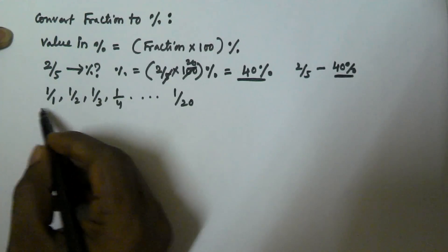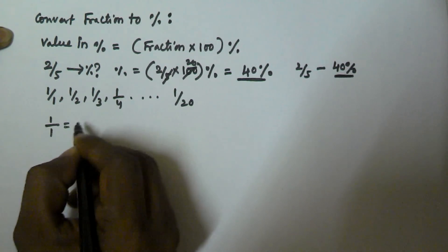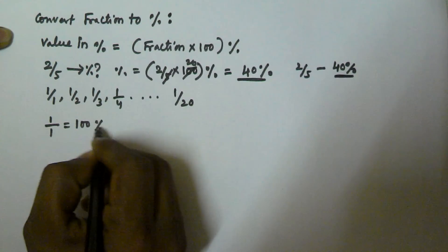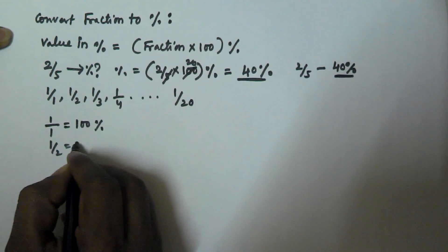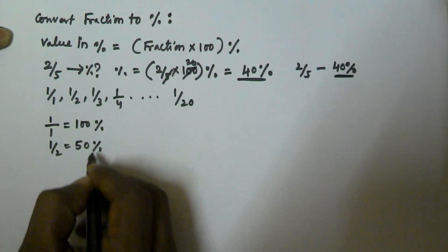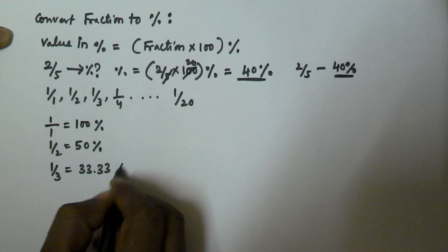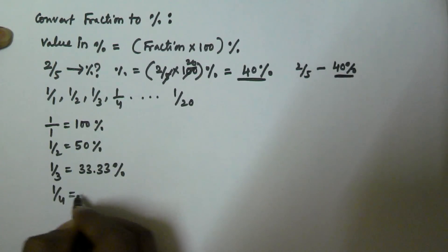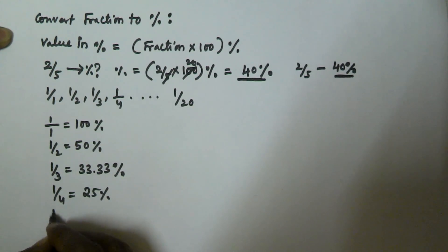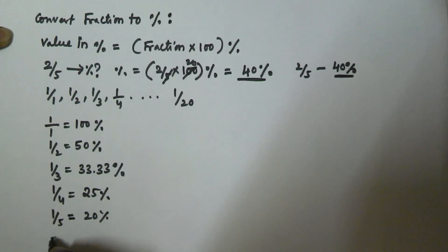Here are the values: 1/1 is equal to 100%, 1/2 is equivalent to 50%, 1/3 is equal to 33.33%, 1/4 is equivalent to 25%, and 1/5 is equivalent to 20%.